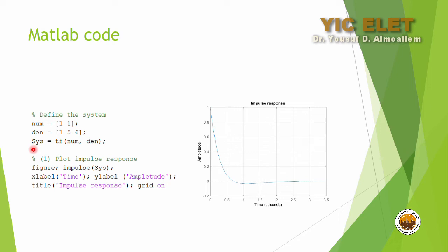Once the system is defined in the s-domain, we plot the impulse response using the impulse(sys) function. We set the x-label to 'Time', y-label to 'Amplitude', and the title to 'Impulse Response'. We also turn the grid on to see the details of the function clearly.